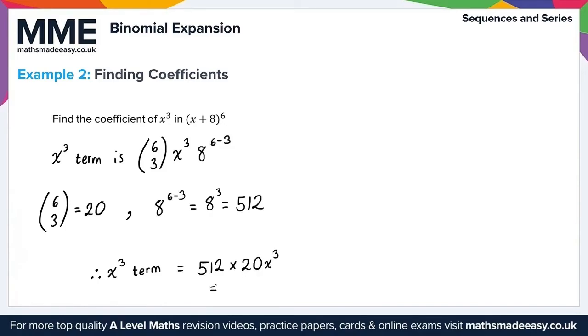So all we need to do here is 512 times 20 and that gives us 10,240x³ there. So our coefficient then of x³ is 10,240, so coefficient is 10,240. And that gives us the solution to example 2 there.